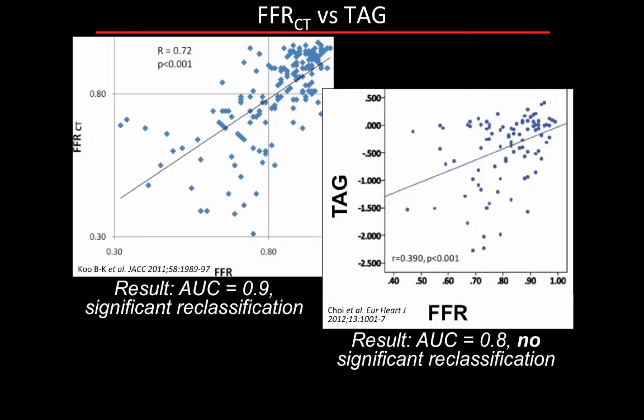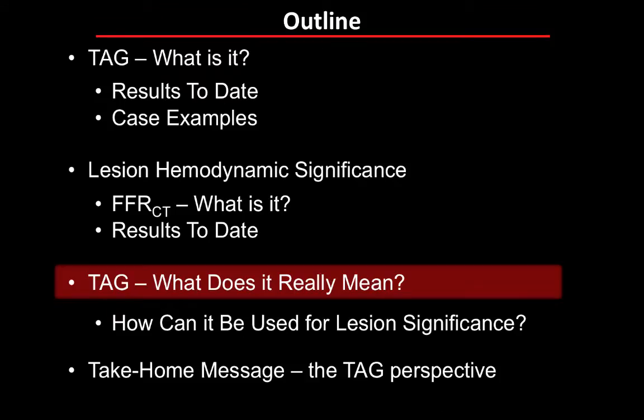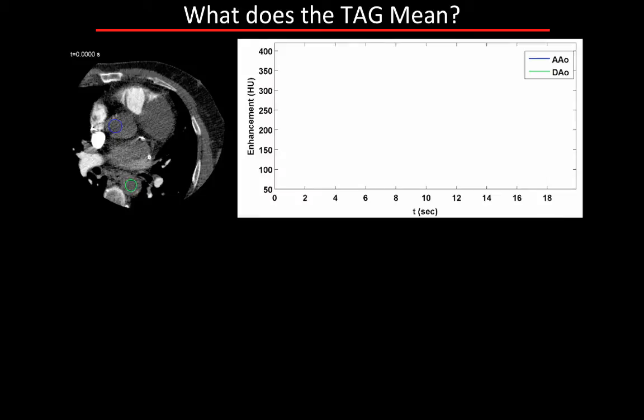Putting the two together—FFR-CT versus invasive FFR, and TAG versus invasive FFR—the scatter plots are not that different from each other. TAG does carry information about hemodynamics, but it seems we're not getting at it correctly. The next step is to understand what TAG really means, and then figure out how to correctly use it to quantify lesion hemodynamic significance.